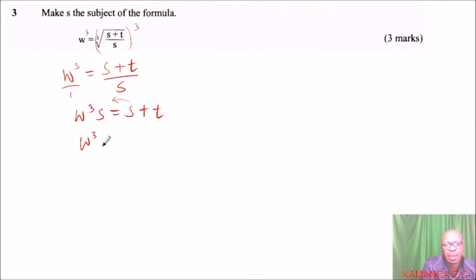We can take s to this side, so we have w cubed s minus s equals t. Factor out s here, s is common, you'll be left with w cubed minus one equals t. So divide both sides by w cubed minus one.